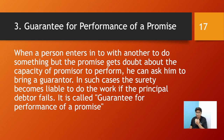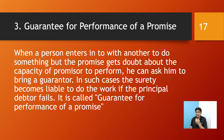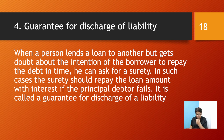The third kind is guarantee for performance of a promise. When a person enters into a contract with another to do something but the promisee has doubts about the capacity of the promisor to perform, he can ask for a guarantor. In such cases, the surety becomes liable to do the work if the principal debtor fails. The fourth kind is guarantee for discharge of liability — when a person lends a loan but has doubts about the borrower's intention to repay, the surety must repay the loan amount with interest if the principal debtor fails.